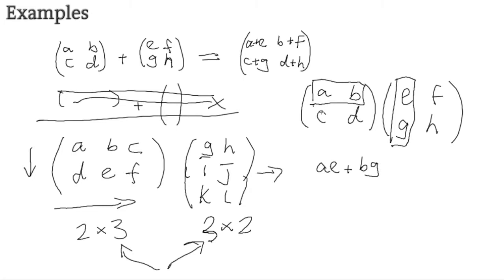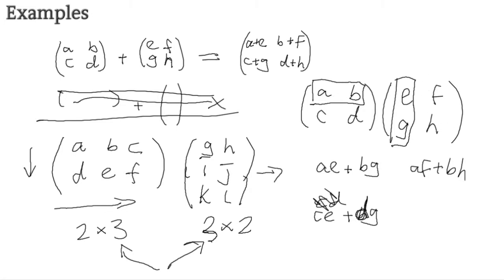For the second row with the same first column — C, D dotted with E, G — you get CE plus DG. Then taking row 1 with column 2 gives AF plus BH, and row 2 with column 2 gives CF plus DH. That gives you the full multiplied 2x2 result matrix. For a larger case like a 2x3 times a 3x2, it works exactly the same way: for example, the first component would be AG plus BI plus CK, and you continue expanding from there. Just remember it's the dot product — nothing more special than that.